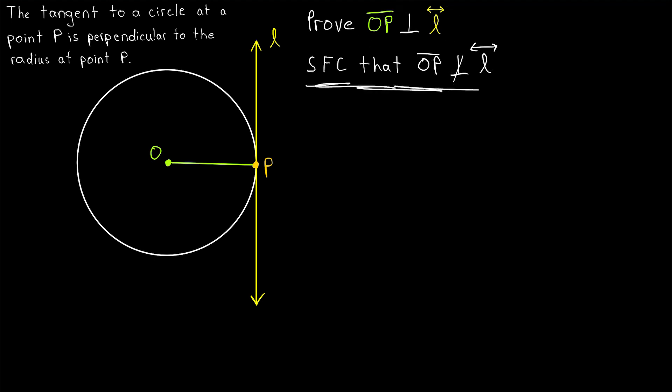Now, what's useful about the contradiction argument here? Well, we know that right angles are useful. We're trying to prove that a right angle exists between OP and the tangent. But by using a contradiction argument, we're able to get a right angle that we can use in the proof.